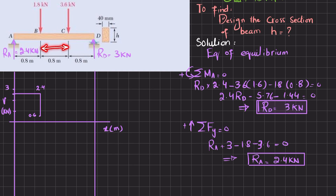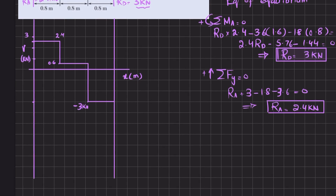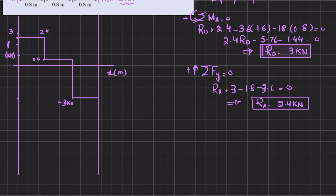From B to C there is no other load, so the shear force remains at 0.6 kN until point C. At point C, there is a downward load of 3.6 kN, so 0.6 − 3.6 = −3.0 kN. The shear force drops to −3 kN and remains constant from C to D. At D, the reaction of +3 kN brings it back to zero. This completes the shear force diagram.